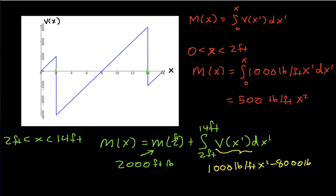Okay. So I integrate this from 2 feet to 14 feet. Plug this guy 2,000 foot pounds in here. And when I do that and do all the simplification, I get that mx is going to be 500 pounds per foot x squared minus 8,000 pounds times x plus 16,000 foot pounds. Okay. So that gives me mx between 2 feet and 14 feet.